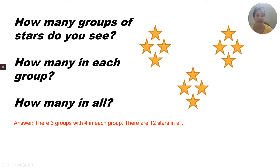I have three groups — one, two, three. There are four in each group — one, two, three, four. And there are 12 in all — one, two, three, four, five, six, seven, eight, nine, ten, eleven, twelve.